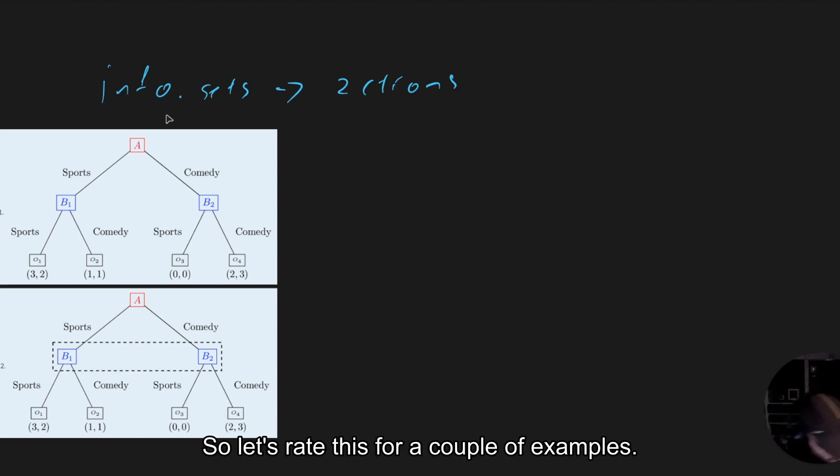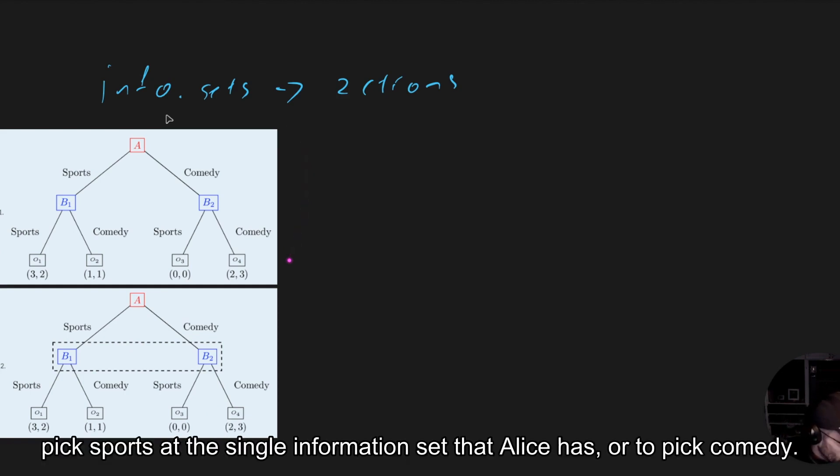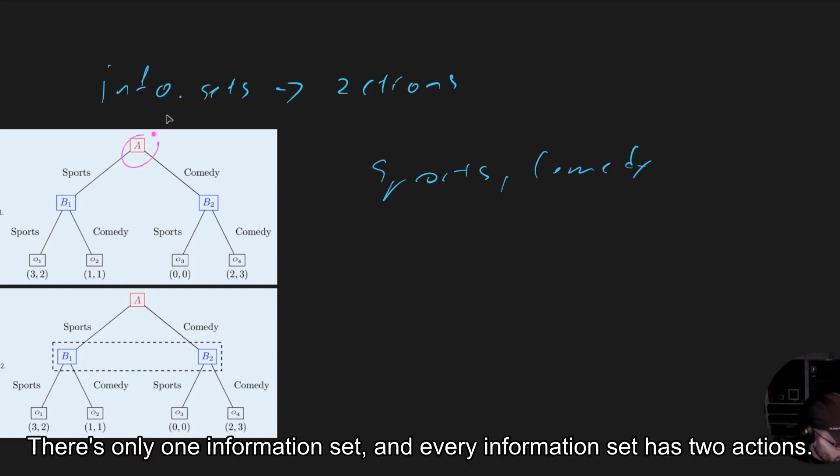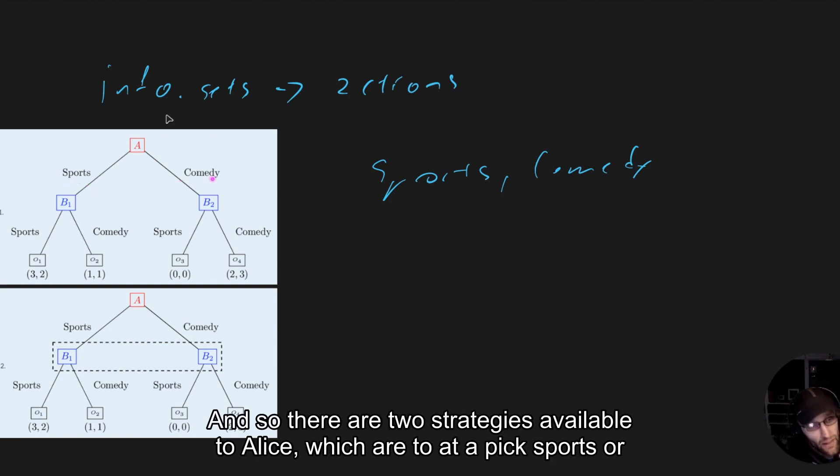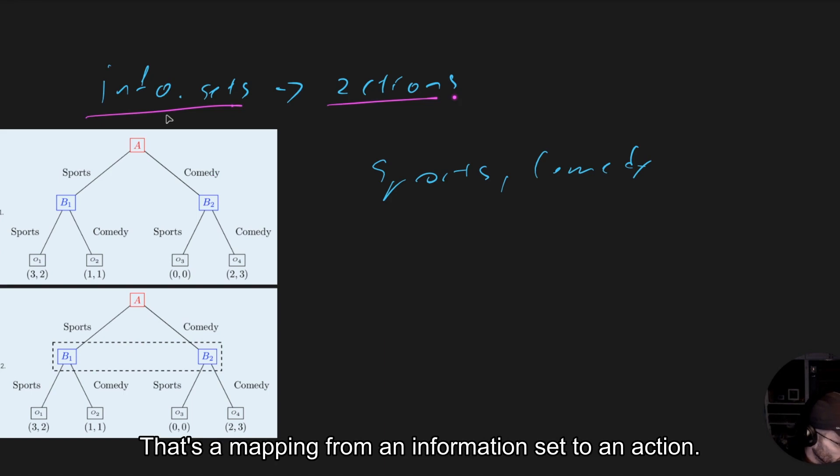Let's illustrate this for a couple of examples. The full set of strategies available to Alice in this game here are to either pick sports at the single information set that Alice has, or to pick comedy. There's only one information set and every information set has two actions. So there are two strategies available to Alice, which are to at A pick sports or at A pick comedy. Notice how I'm saying at A do something. That's a mapping from an information set to an action.